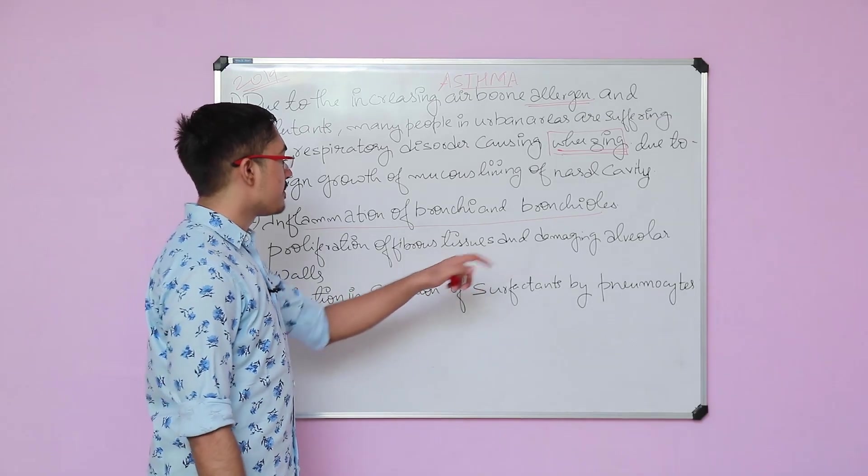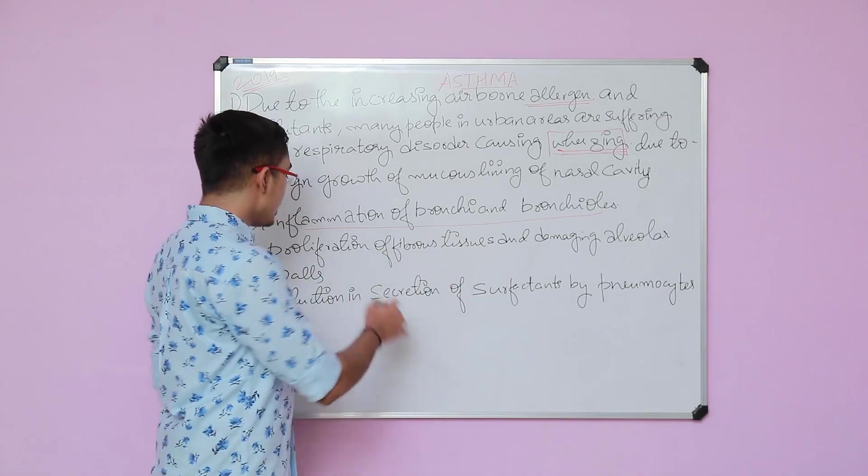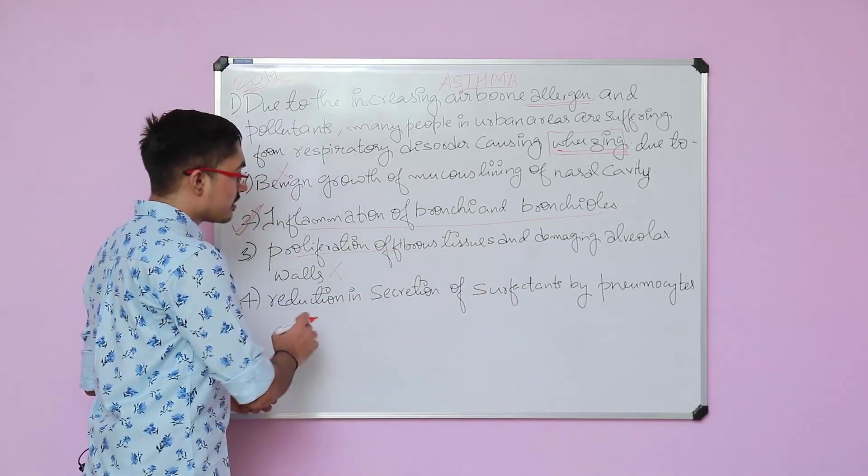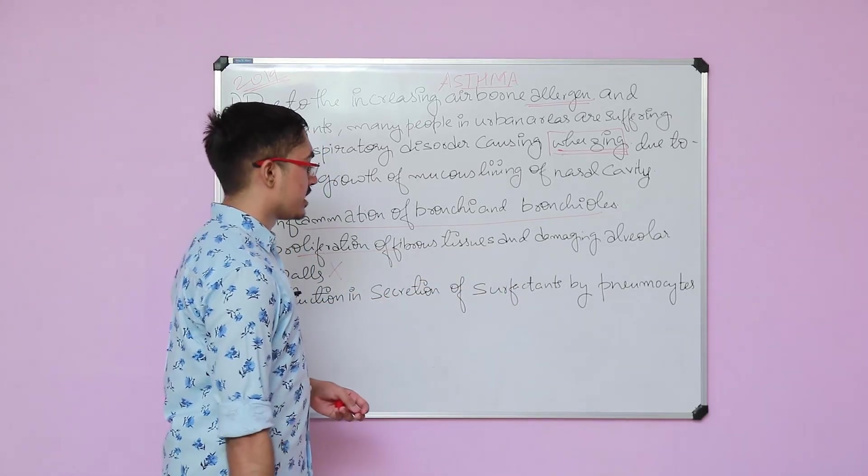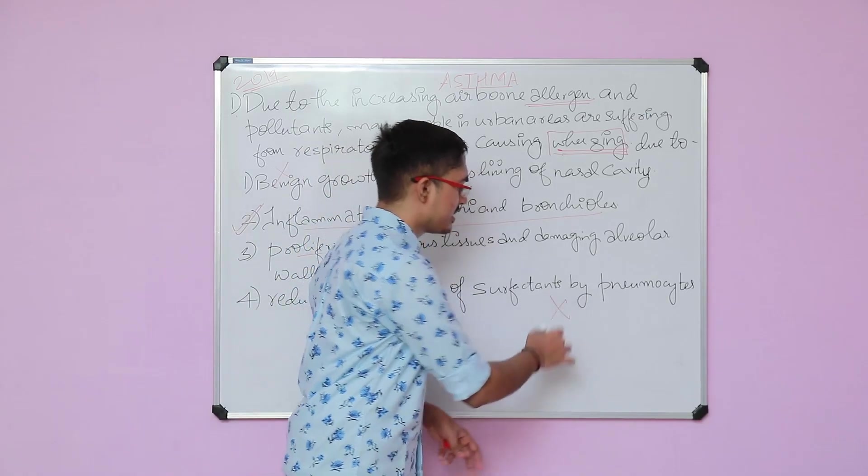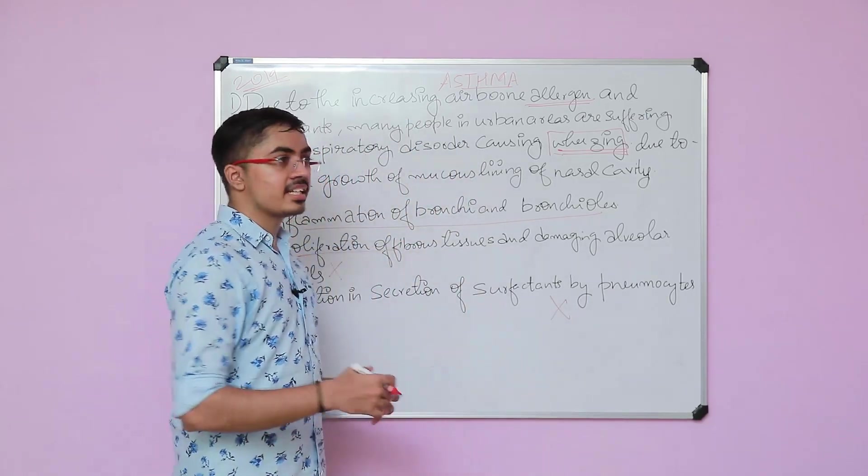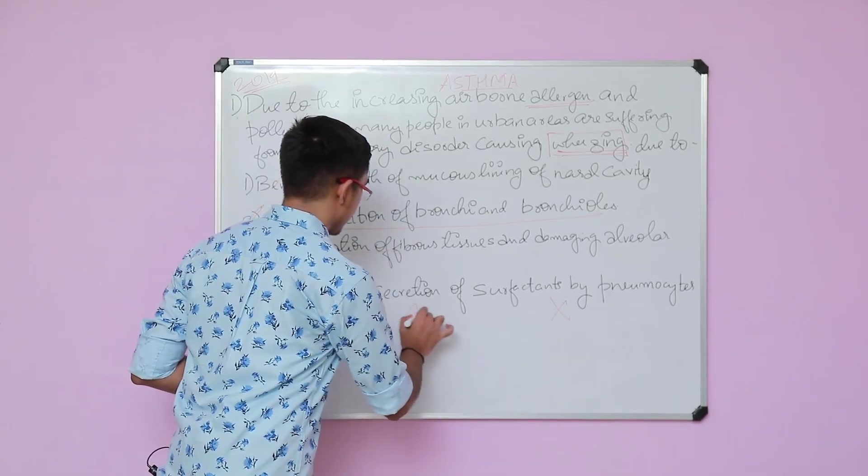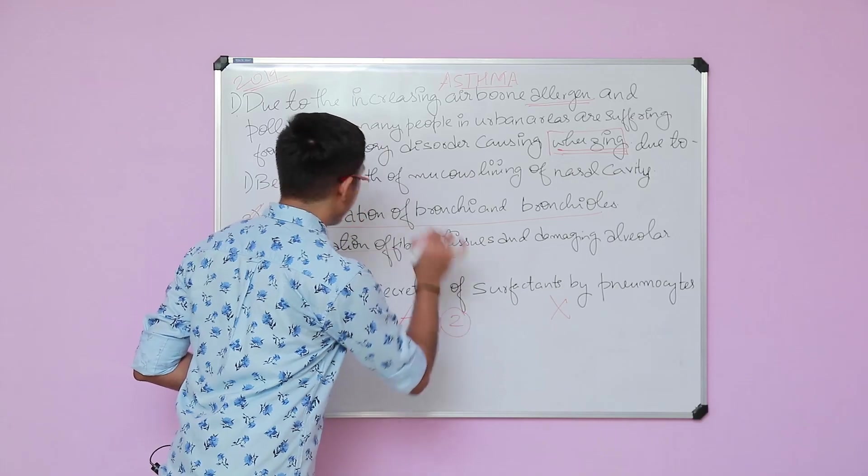Proliferation of fibrous tissue and damaging alveolar walls of the lungs - no, there is no proliferation of any tissue. Reduction secretion of surfactant by pneumocyte - no, this is not the case. This is the case in certain other disease, which I don't think is necessary at this level. The correct answer for this question is option number 2.